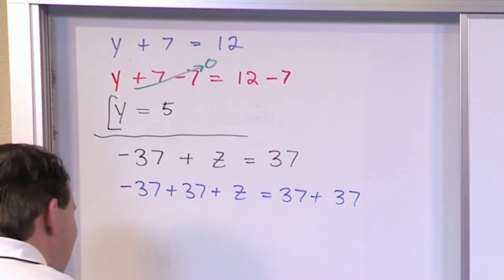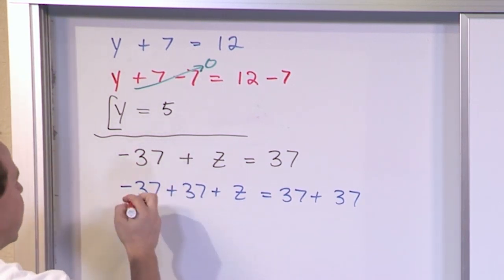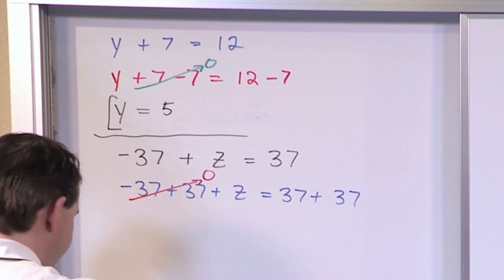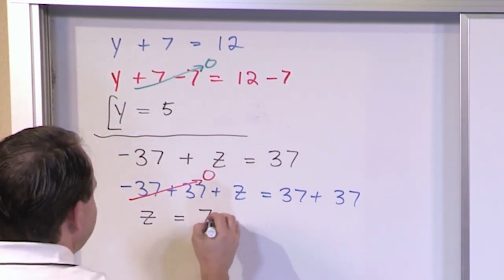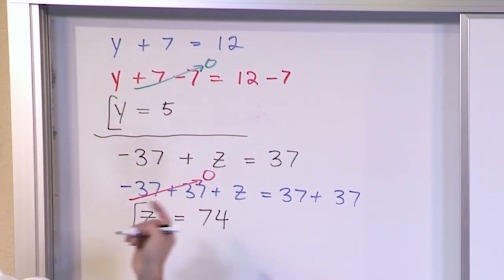The reason we're adding it is because negative 37 plus 37 is 0. And that basically eliminates everything on the left-hand side. The only thing we have left is z. On the right-hand side, we have 37 plus 37, which is 74. The answer is 74.